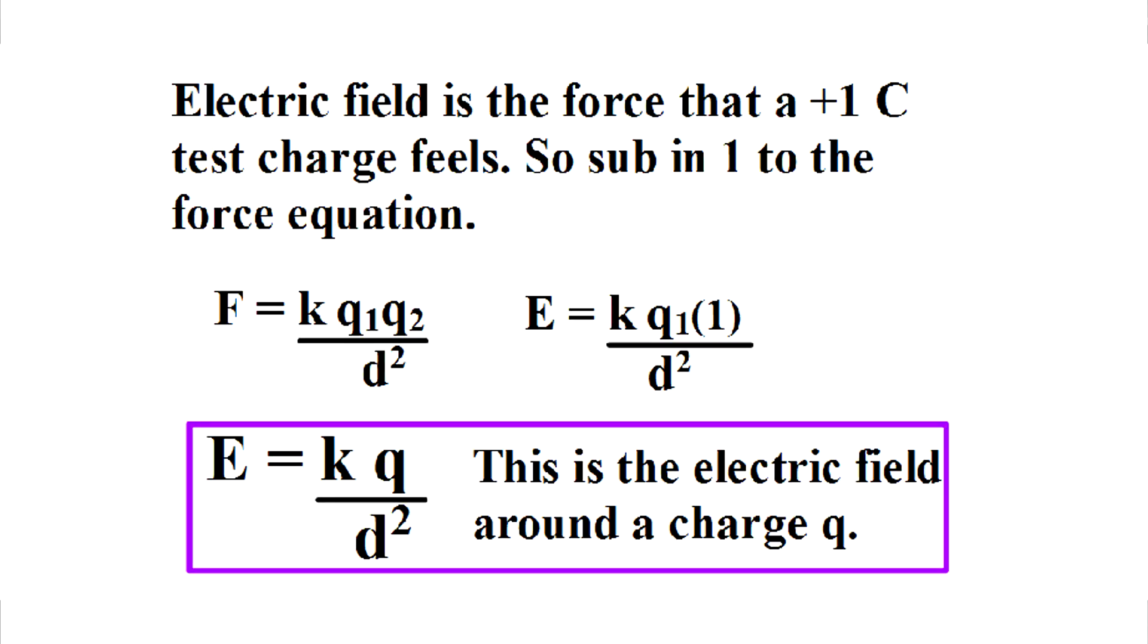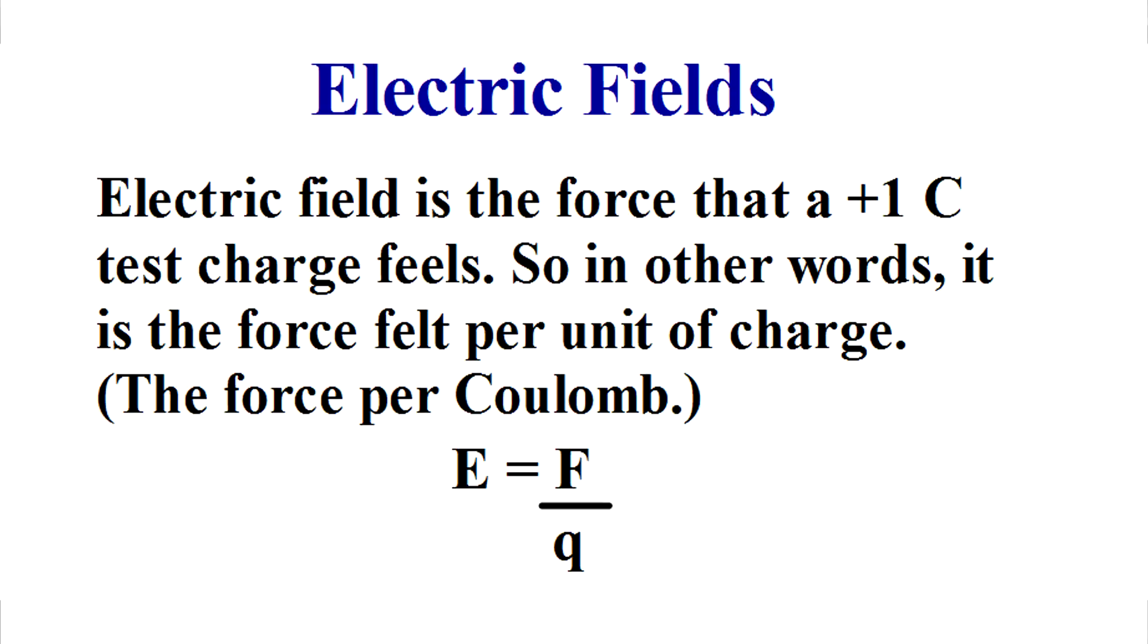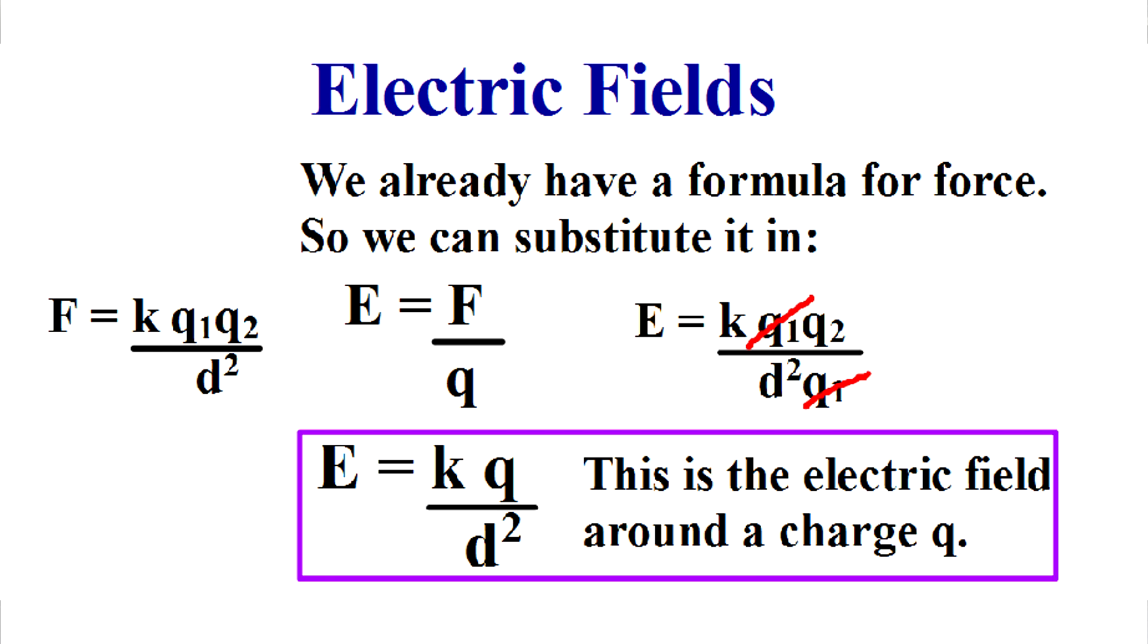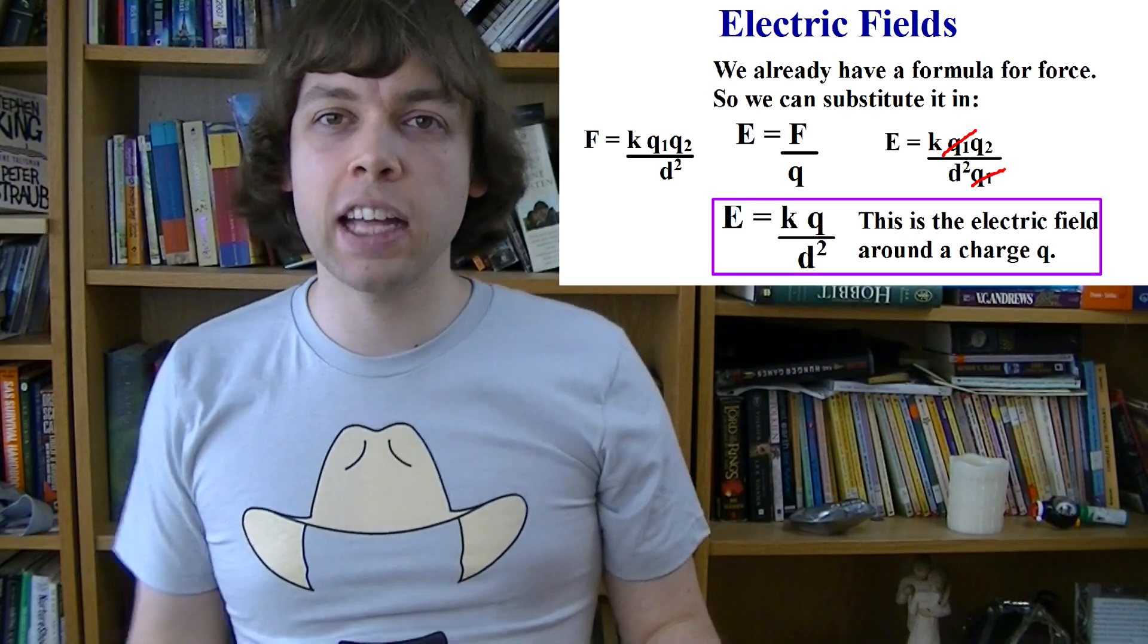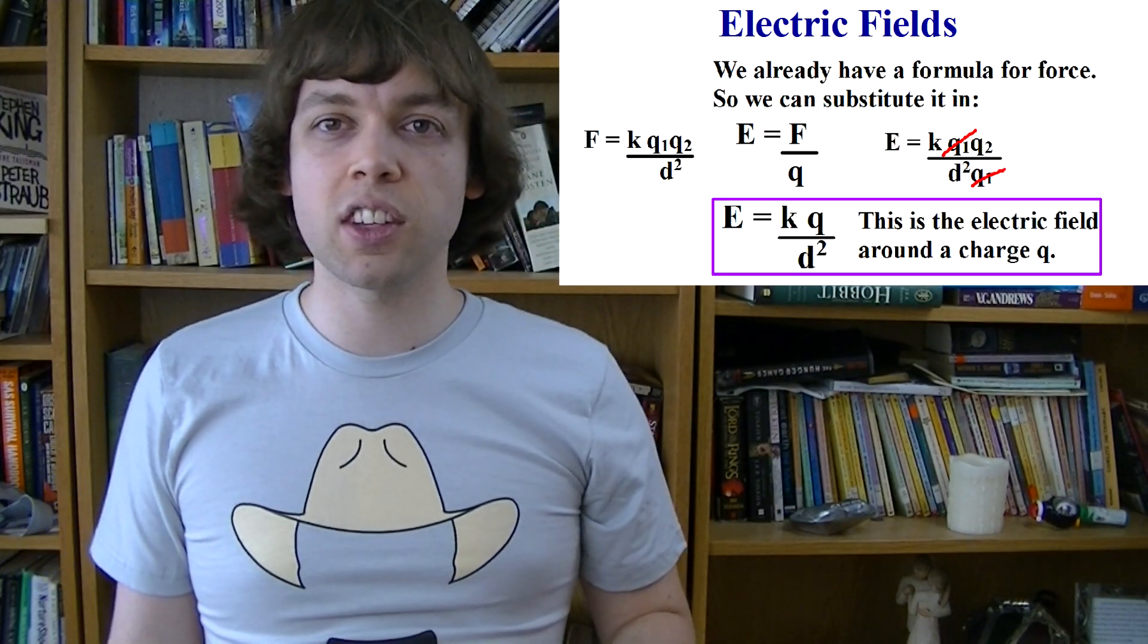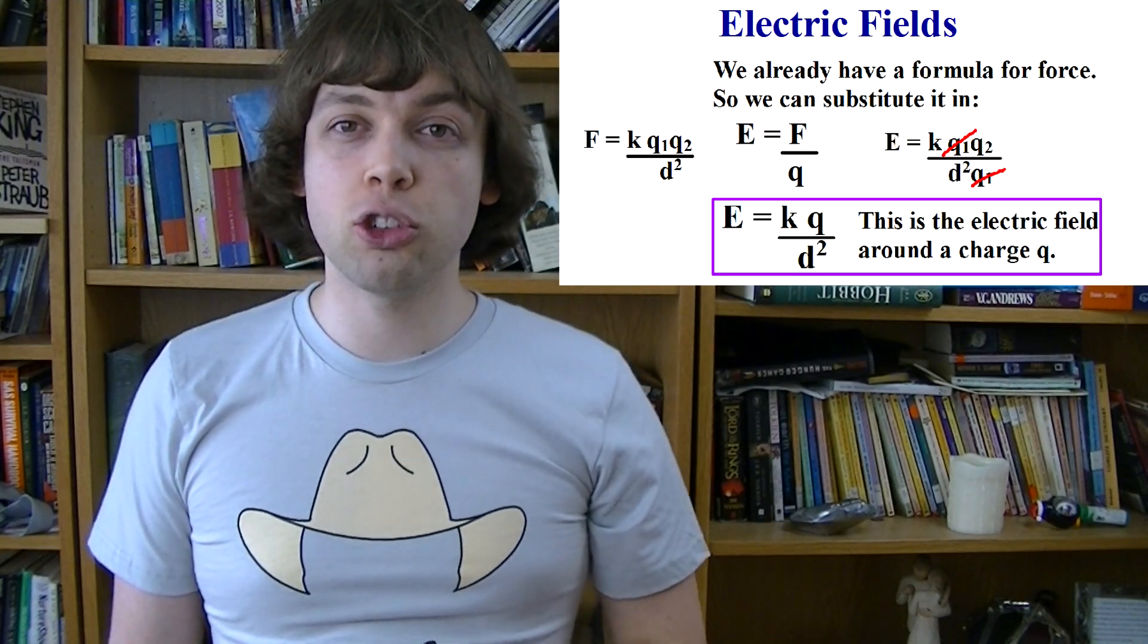So as much as those pictures are nice and avoid some of the mathematics, unfortunately there is still an equation for electric field. Since electric field is the force that a 1 Coulomb positive test charge would feel, we can substitute a value of 1 Coulomb into our force equation, and that will give us the equation for electric field, created by a point charge q. Another way of thinking about this is to say that electric field is defined as the force felt per unit charge, per Coulomb of charge. So in other words, it's force divided by charge, f over q. So if we take our force equation and divide it by q, we get the equation for electric field. These two ways of deriving the equation are exactly the same as each other. And again, just like in the force equation, k is still Coulomb's constant, 9 times 10 to the 9, q is the size of the charge that's producing the electric field, and d is the distance you are from that charge.